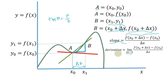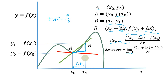So this is the derivative — this is the definition of derivative. The derivative of f of x at point x naught is the slope of the tangent line at point x naught. That is the definition of derivative.